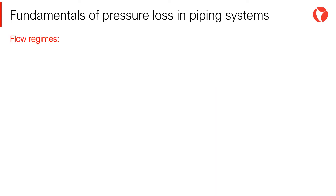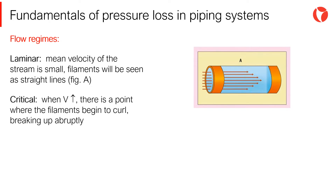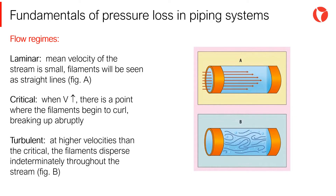If small amounts of a colored fluid are injected in a water stream flowing through a glass pipe, and we observe the behavior of the colored filaments in the different areas after the injection points, the following will be seen. If the mean velocity of the stream is small, the colored filaments will be seen as straight lines, known as laminar flow. As the flow rate increases, these filaments continue to move in straight lines until a certain velocity is reached where the filaments begin to curl, breaking in an abrupt and fuzzy way — this occurs at the so-called critical velocity. At higher velocities than the critical, the filaments disperse indeterminately throughout the stream, known as turbulent flow.